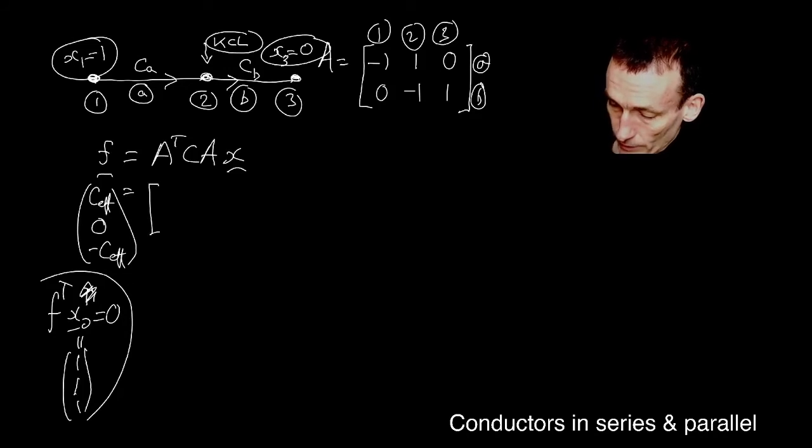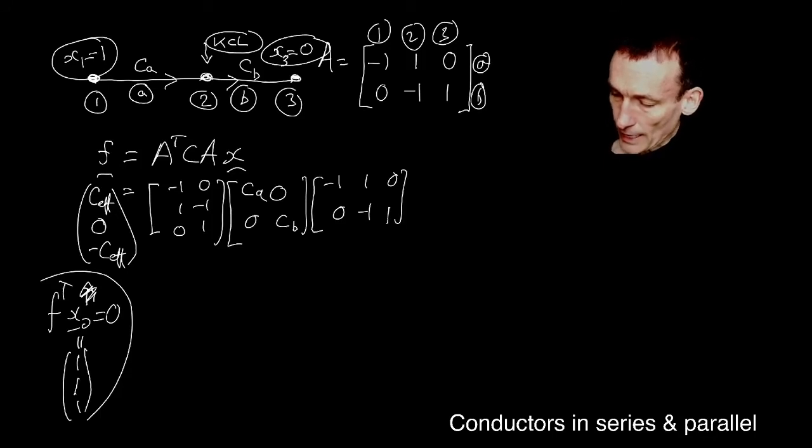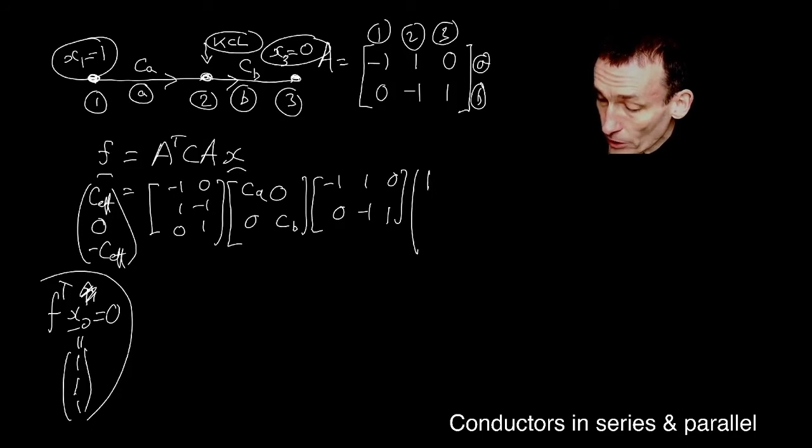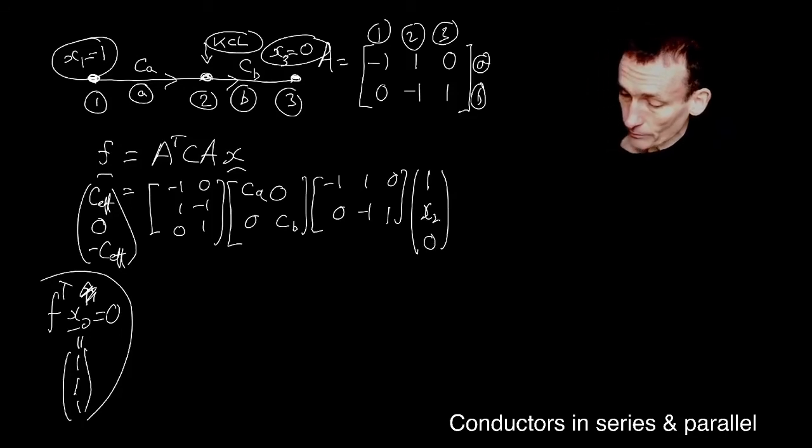All right. That's from the. We already know to expect that. So let's just write down A transpose. Isn't that just this? C A again is just CA, CB. And then there's my. And my X now is one. And then I don't know the voltage X two. So let's call it X two. And then zero.